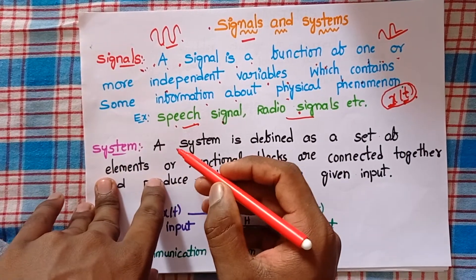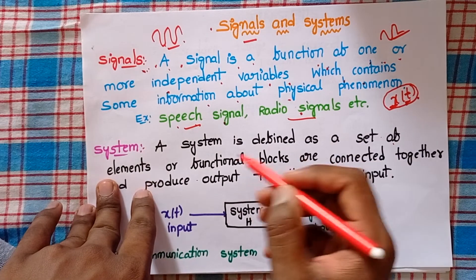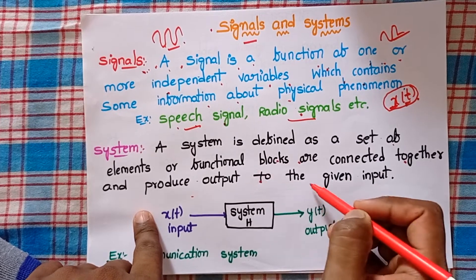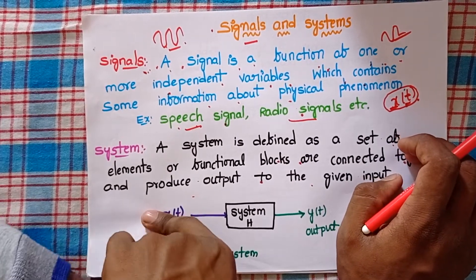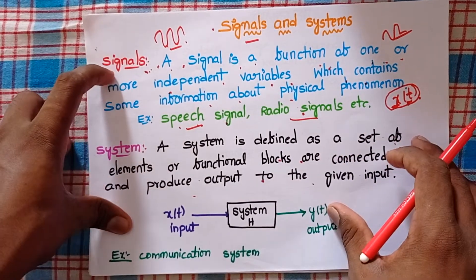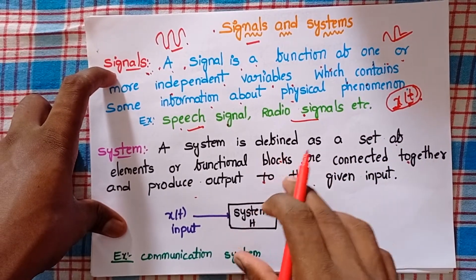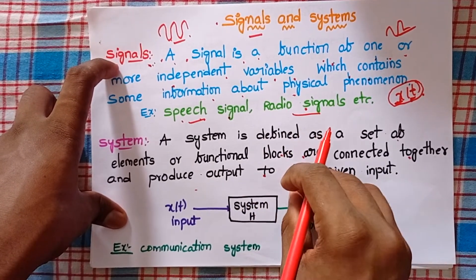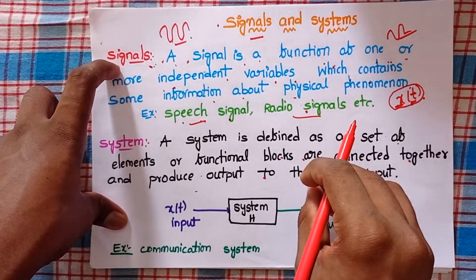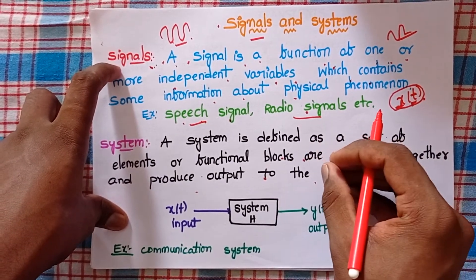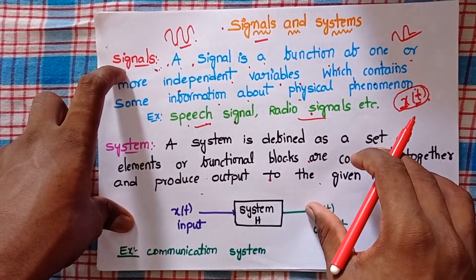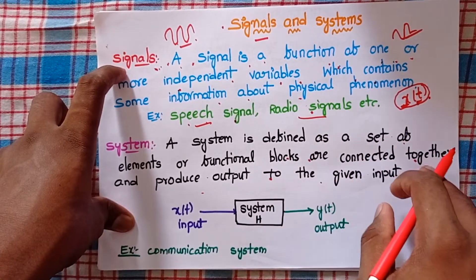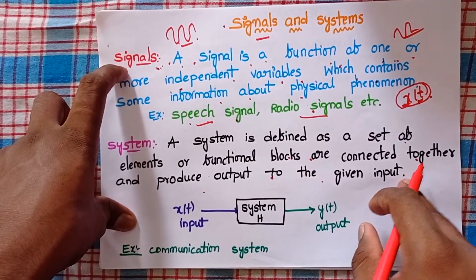Now let's see what is a system. A system is defined as a set of elements or function blocks connected together to produce output for a given input. Consider any system — it is a combination of elements. An electronic system is a combination of electronic elements; a mechanical system is a combination of mechanical elements.